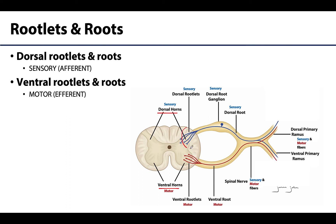Dorsal rootlets will coalesce into the dorsal root, and these are composed of sensory fibers and only sensory fibers. The dorsal horns of the gray matter will be sensory, so the rootlets as well as the dorsal root will also be sensory.